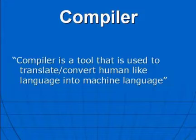What is compiler? Compiler is a tool that is used to translate or convert human-like language into machine language. There are two things should be clear: human-like language and machine language.